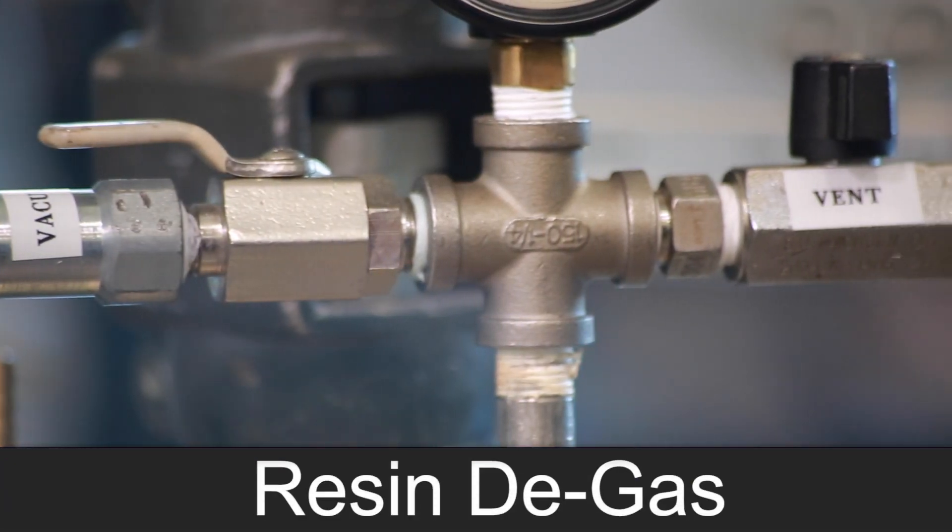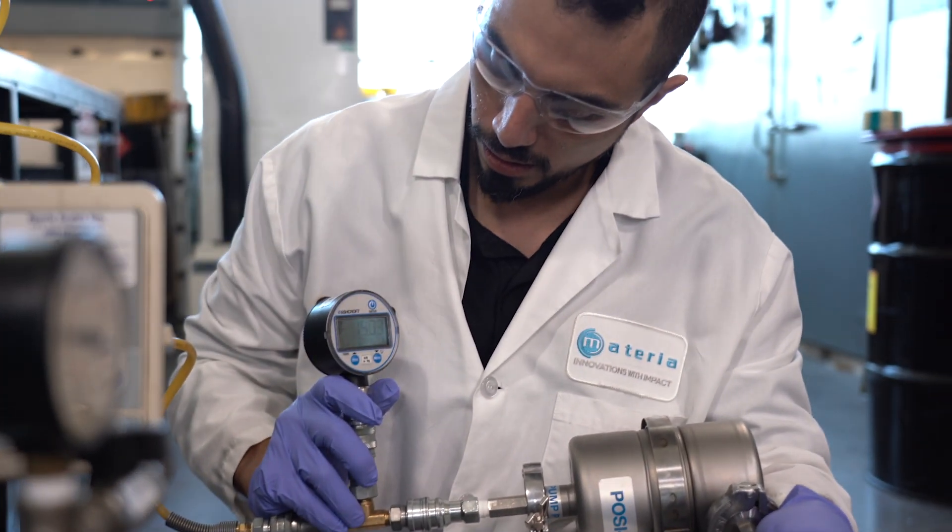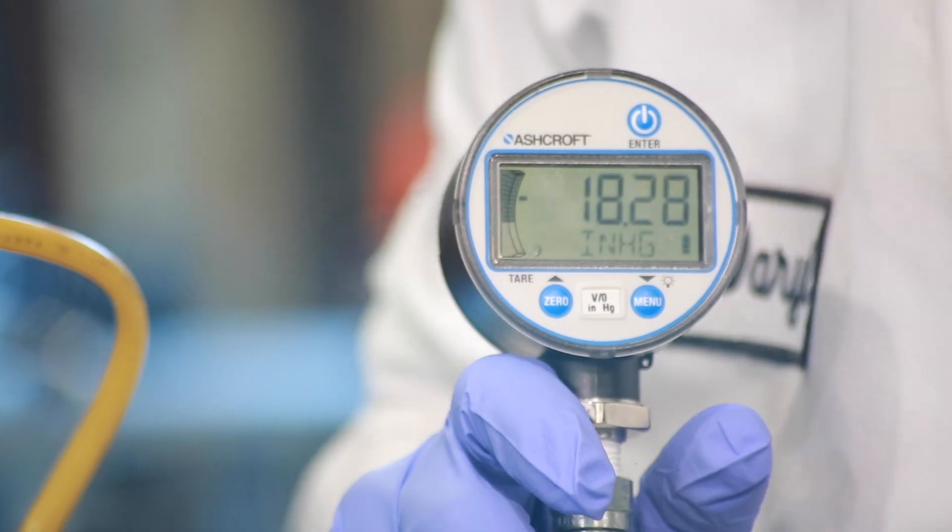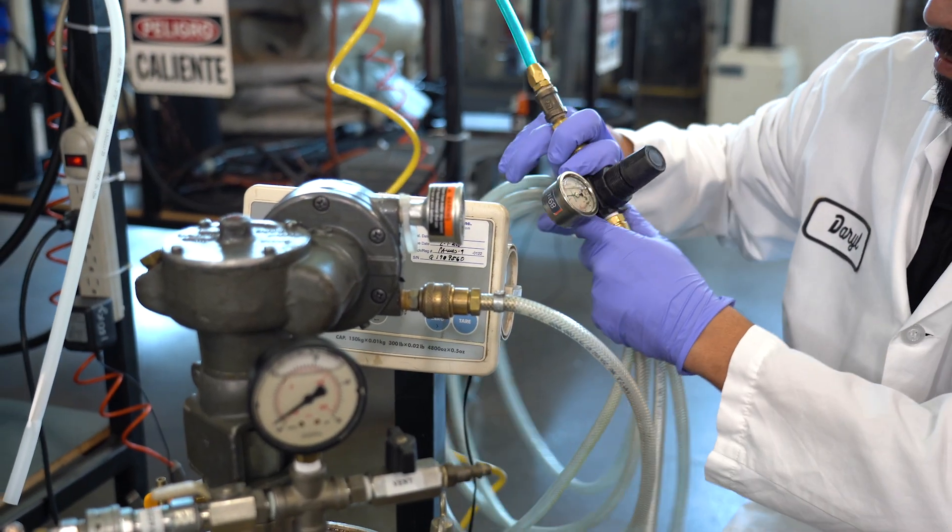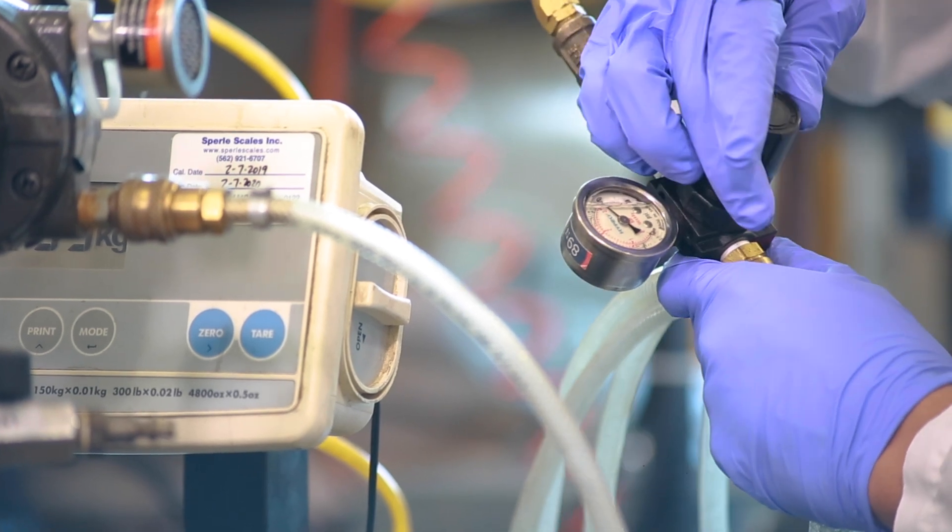Once your resin is weighed out, begin to degas. Run the agitator in the mixing vessel. Ensure that the vessel is below negative 27 inches of mercury. Be sure to use a vapor trap with activated charcoal filters in line to keep any VOCs out of the pump's oil.